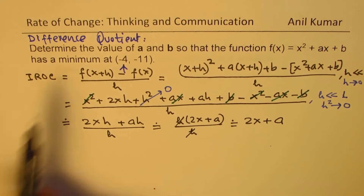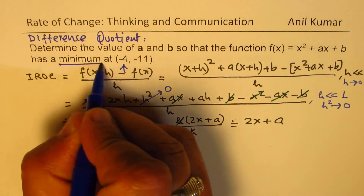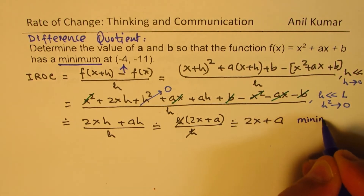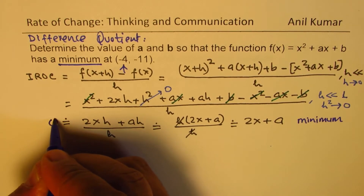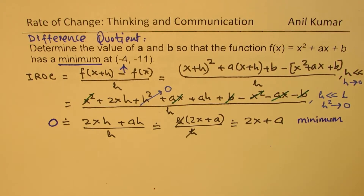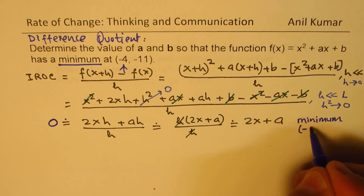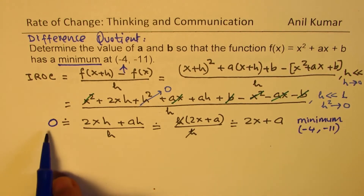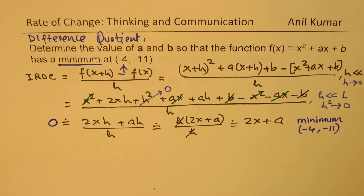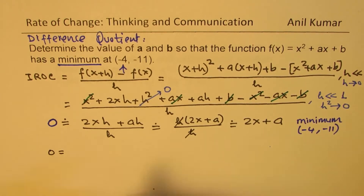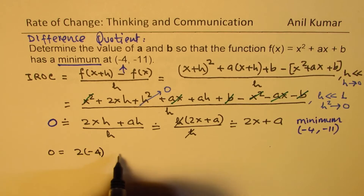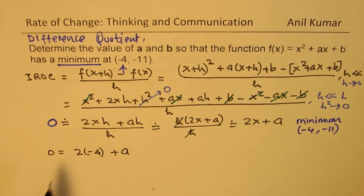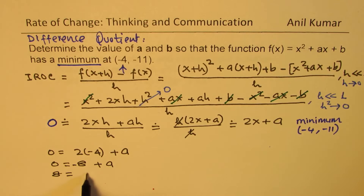Since we are looking for a minimum, the instantaneous rate of change should equal zero. The minimum occurs at x equals minus 4, so substituting: 0 equals 2 times (minus 4) plus a. This gives 0 equals minus 8 plus a, so a equals 8.